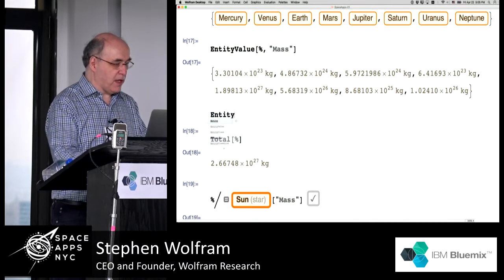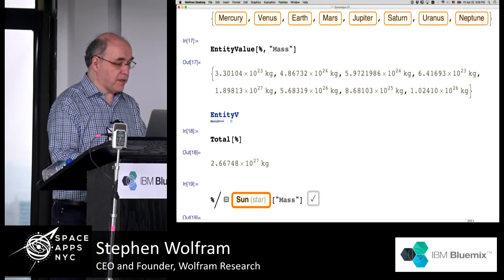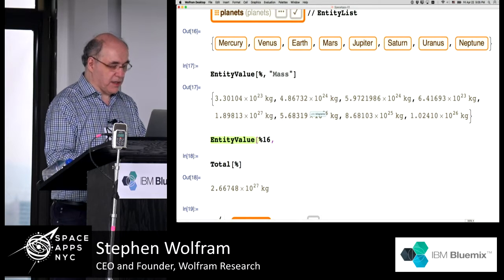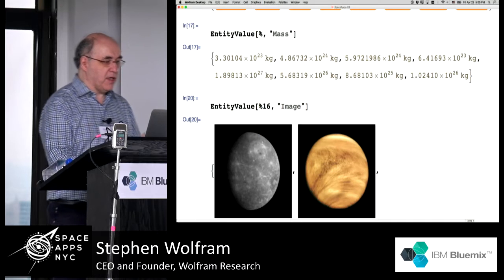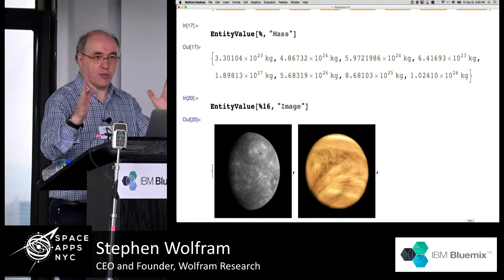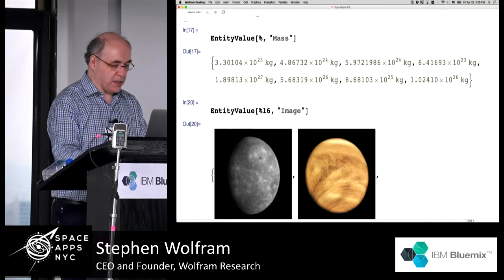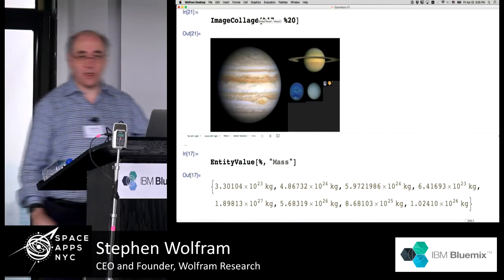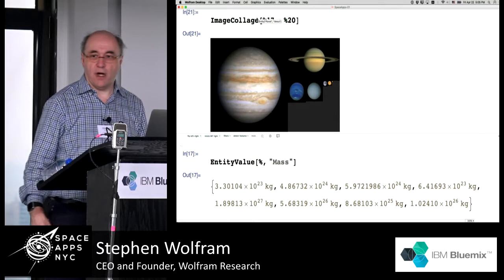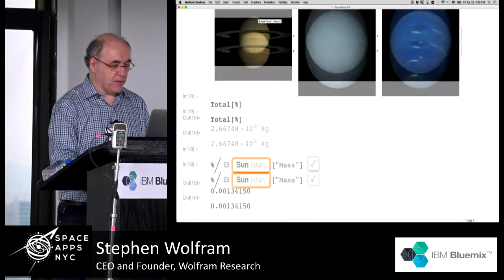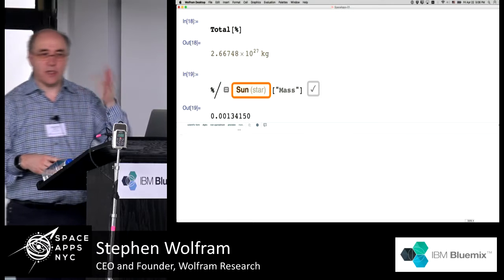Let's take those planets and get images of all of them. One thing we might do is make an image collage where the size of each planet is proportional to its mass. We say ImageCollage with the images, with sizes proportional to their mass. We should be able to get a plot showing the planets with sizes proportional to their mass. Let's do something different — let's do something to do with satellites. We could say, for example, let's take something like the ISS.